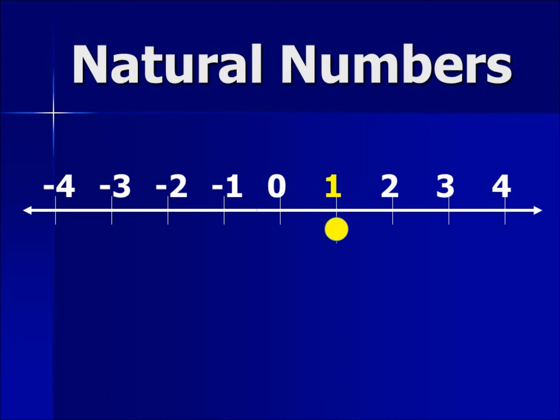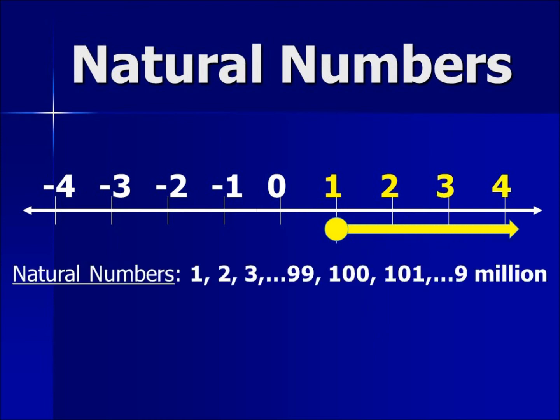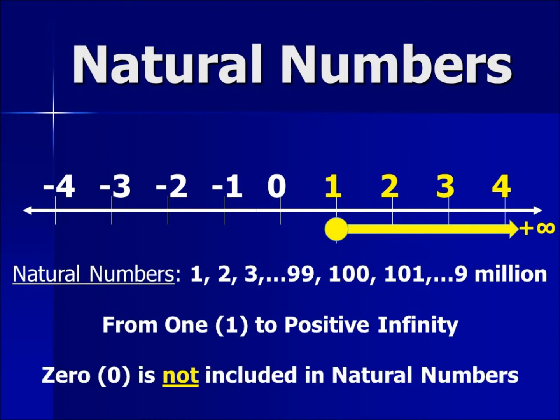Natural numbers contain all the complete positive numbers along the number line: one, two, three... ninety-nine, one hundred, one hundred one... nine million, all the way up to positive infinity. Zero is not included.